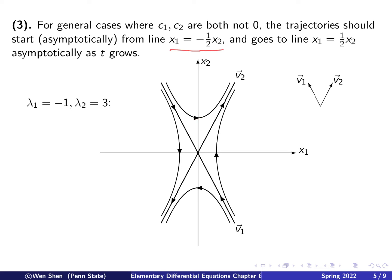Similarly, we draw trajectories in the other three regions. In each region, we draw a hyperbola-like curve with arrows coming in from the v1 direction and going out toward the v2 direction, completing the phase portrait.